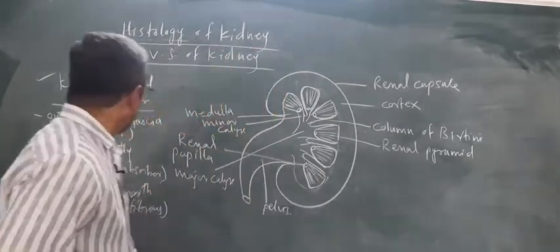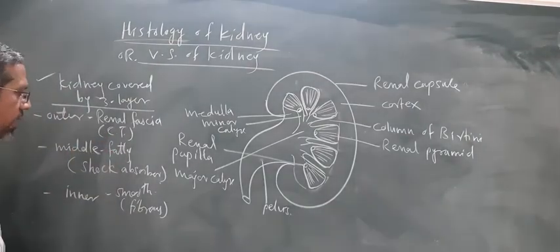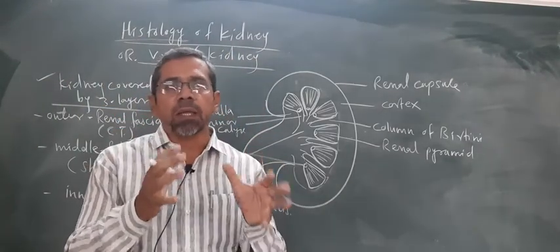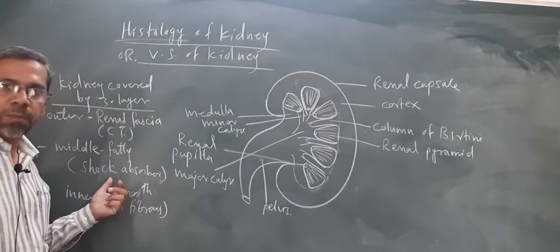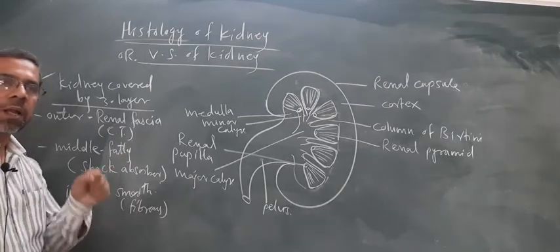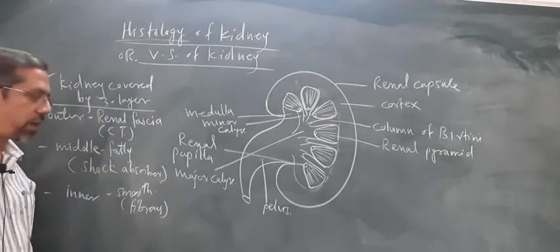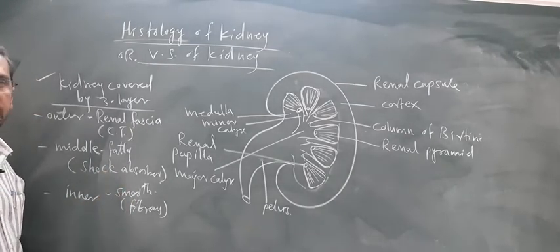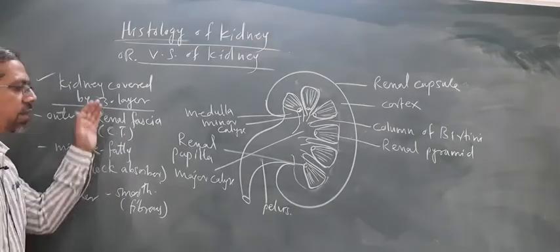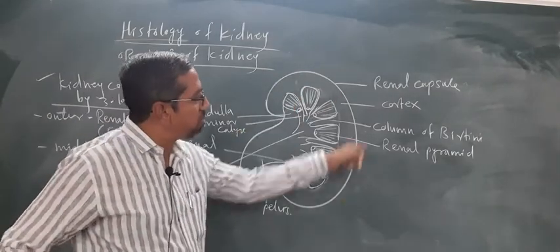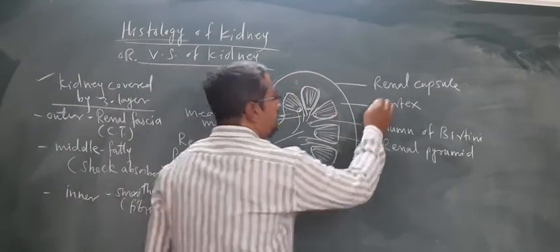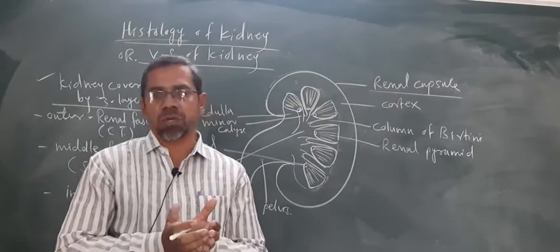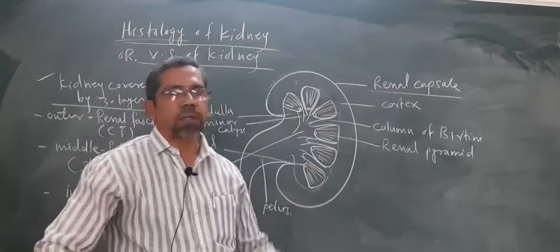Middle layer एक fatty layer है जो adipose connective tissue से बनी होती है। Fat होने की वजह से यह shock absorber की तरह use होती है — अगर कोई shock लगे तो उसे tolerate करने की ability यहां पर होती है। सबसे inner most layer smooth nature में होती है और उसी से bean-shaped structure का outline बनता है, जिसे renal capsule कहा जाता है।